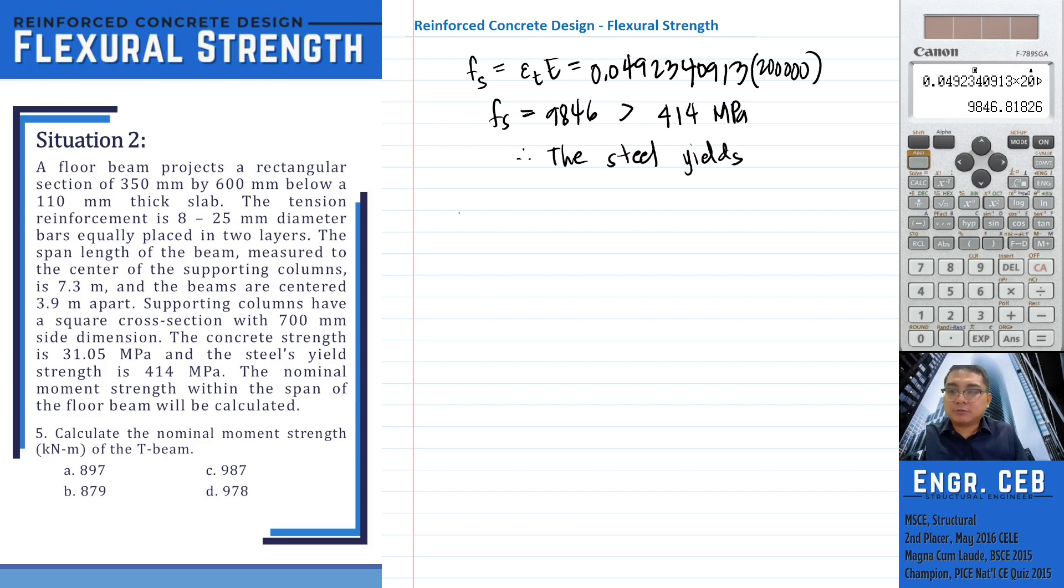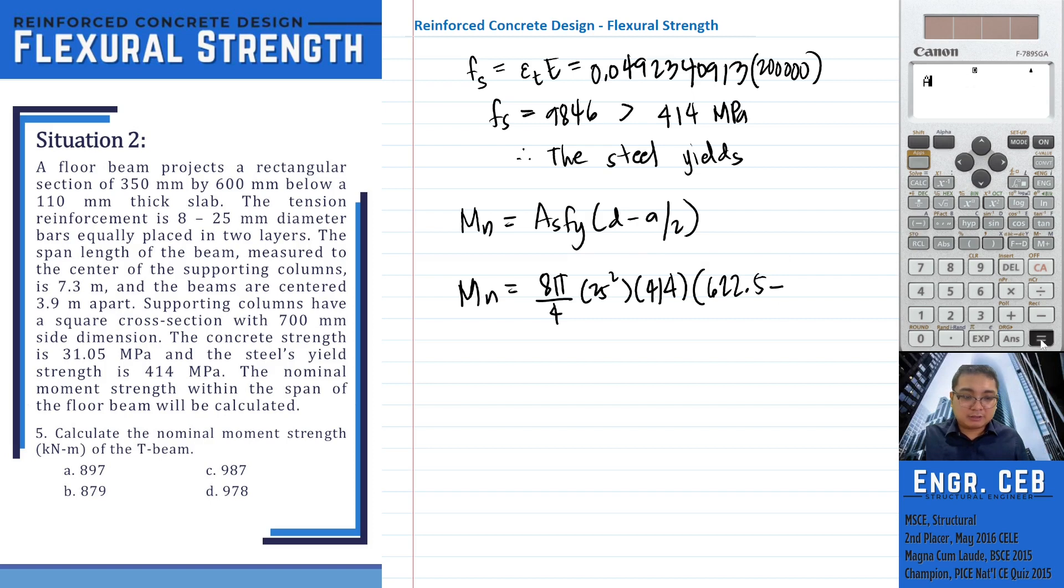We can now solve for the nominal moment strength. That is As×fy times (d - a/2). We have As = 8π/4 × 25² × 414. The effective depth is 622.5 mm, and we already solved for a.